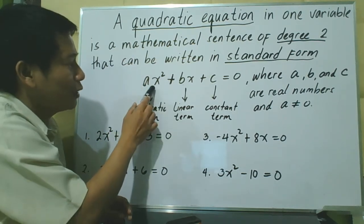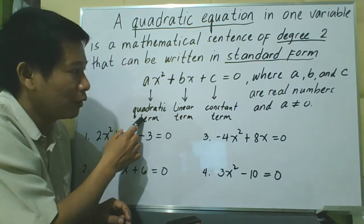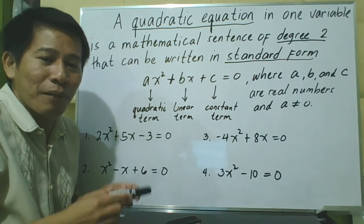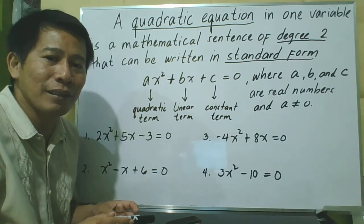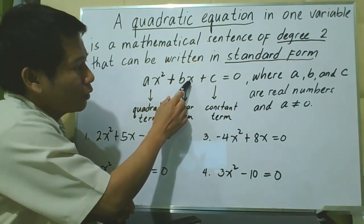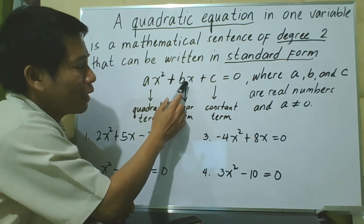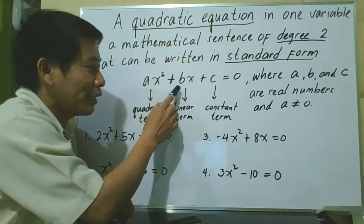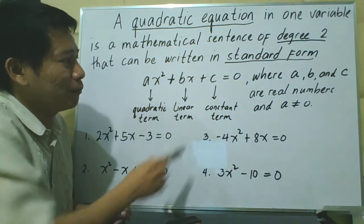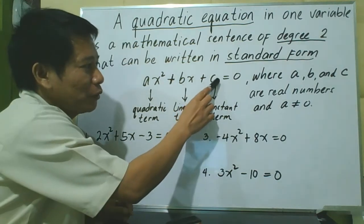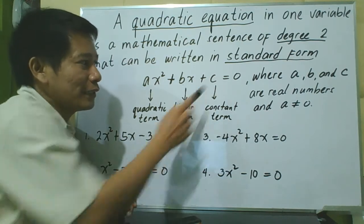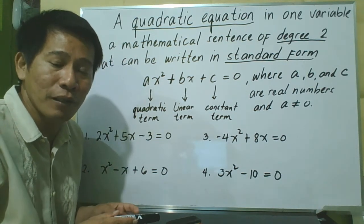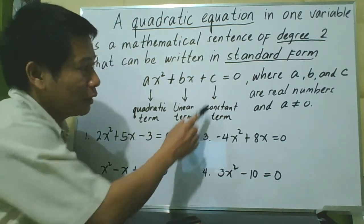That is why ax squared in the standard form is what we call the quadratic term. The second term, positive bx — the variable x here has no exponent. Remember, if there is no exponent on the variable, automatically the exponent is 1. Since the exponent of x is 1, the degree of this term bx is 1, and if the degree of a term is 1, that term is called the linear term. The last term, c, has no variable x, so it is called a constant. A constant term is a term that doesn't have a variable, and its degree is 0.